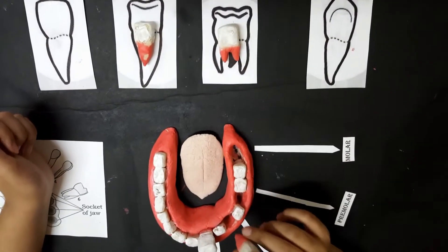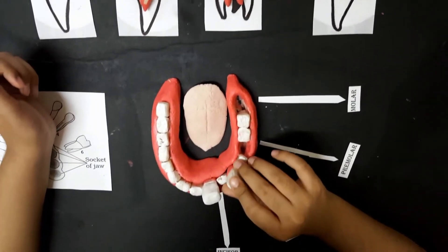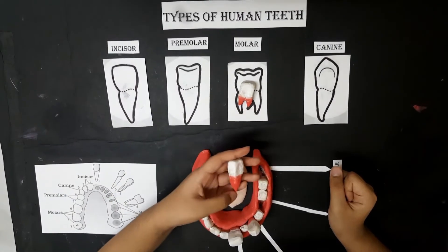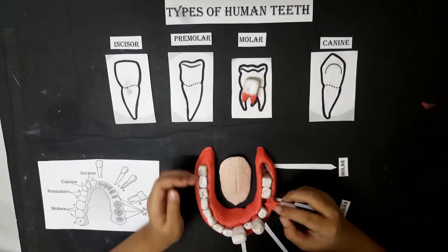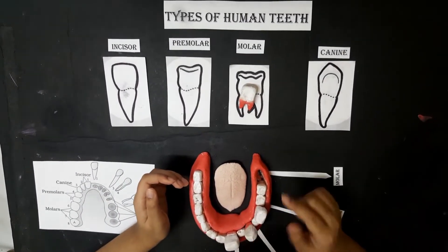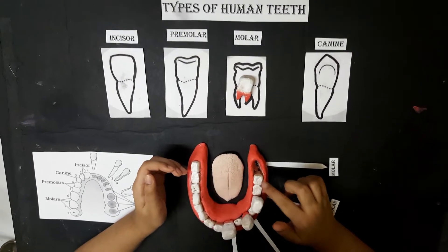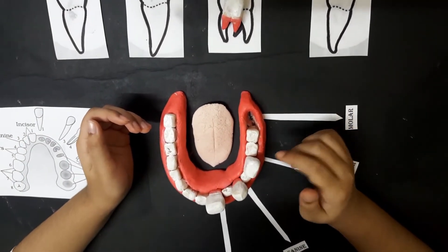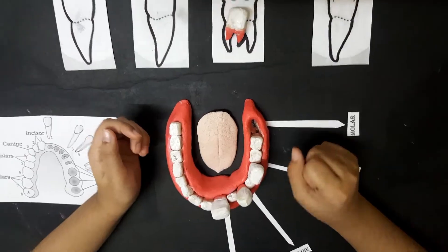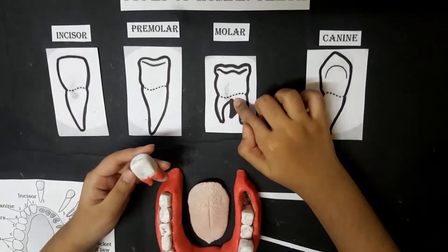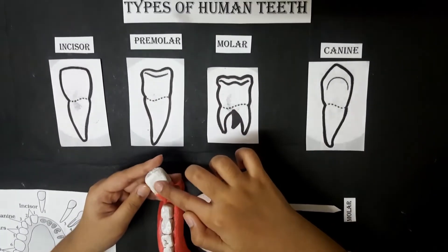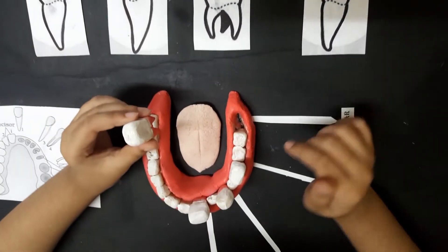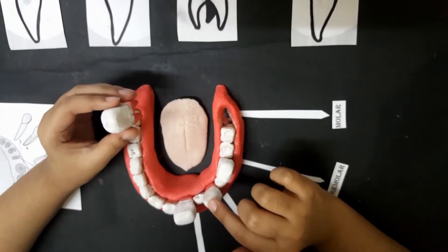Canines are good for tearing meat and they come after the incisors. This is a premolar — it is found between the canines and molars, and it crushes food before it gets to the molar. This is a molar — they are flatter and wider than incisors and canines.